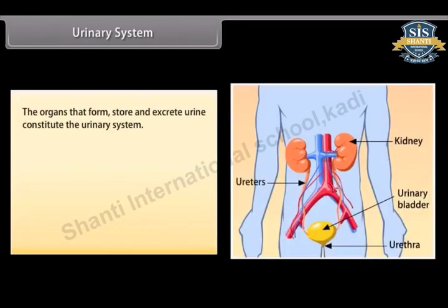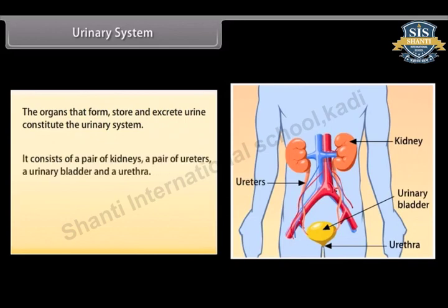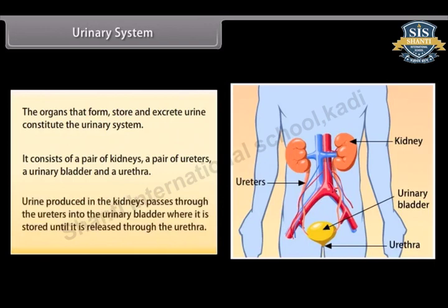The organs that form, store, and excrete urine constitute the urinary system. It consists of a pair of kidneys, a pair of ureters, a urinary bladder, and a urethra. Urine produced in the kidneys passes through the ureters into the urinary bladder, where it is stored until it is released through the urethra.